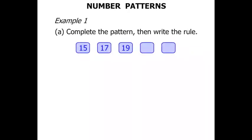So we've got a pattern there. We know the first three numbers. Let's see what happens. We've gone from 15. How do we get to 17?